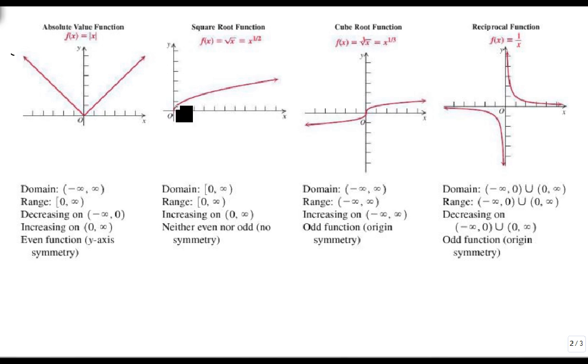A square root function has a domain of zero to infinity, a range of zero to infinity, and it's always increasing where it exists. And it's neither even nor odd.